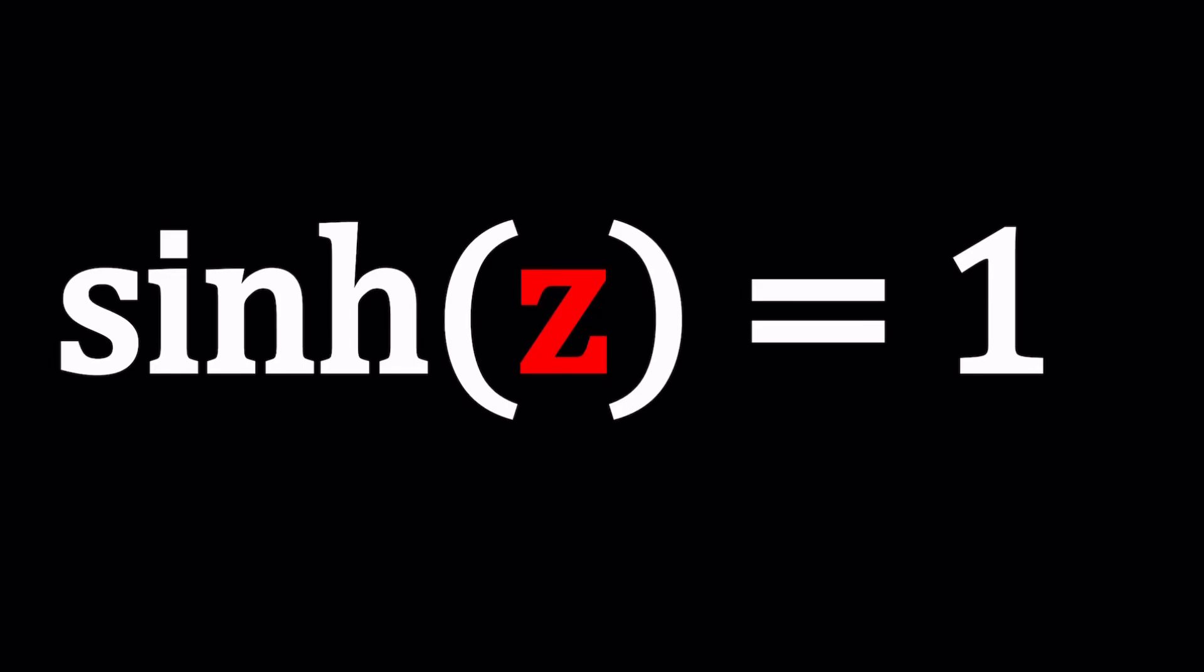Hello everyone, welcome to A plus B I. This channel is all about complex numbers and in this video we're going to be solving a hyperbolic trigonometric equation with complex numbers. How complex can that get, right? So we have sinh(z) equals 1 and we're going to be solving for z. What is z? z is a complex number.